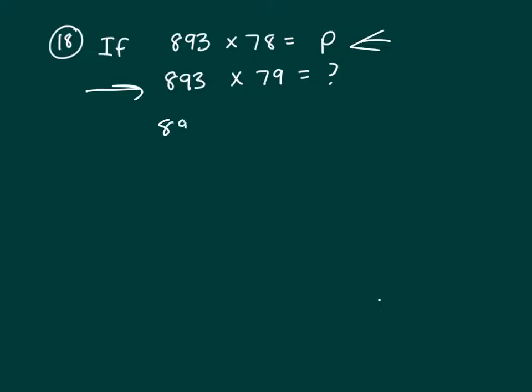So what we need to do is rewrite this as 893 times (78 plus 1), because 78 plus 1 is 79, right?